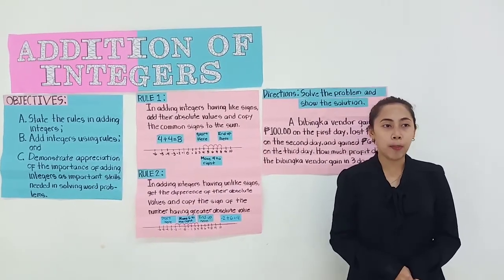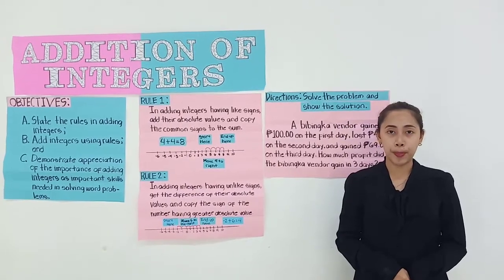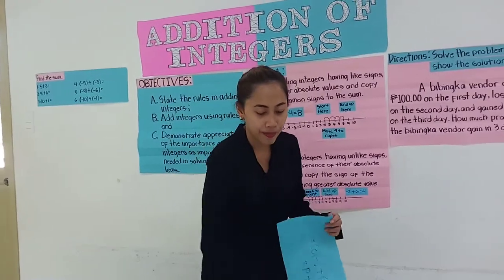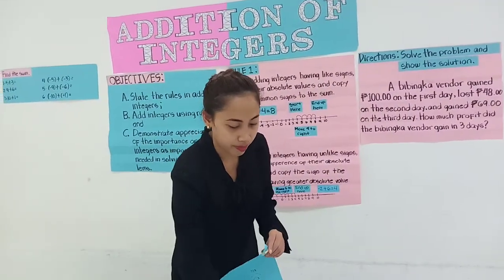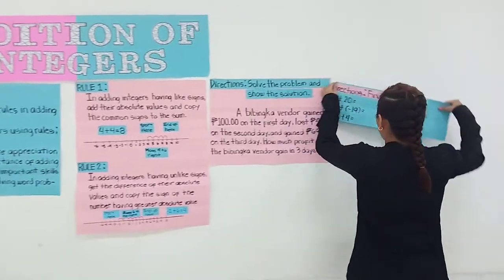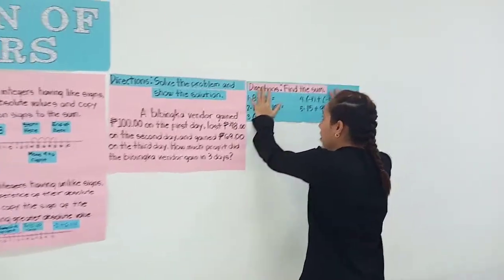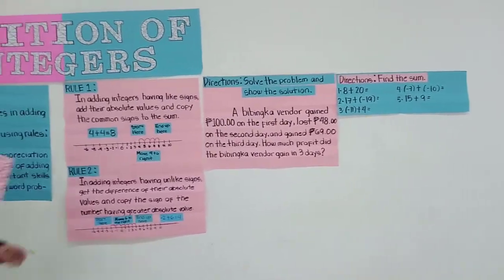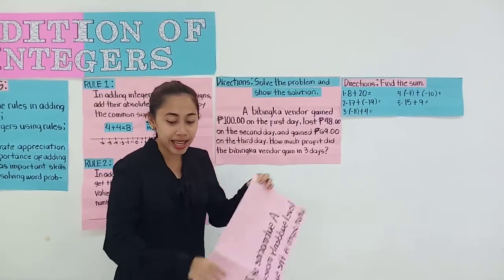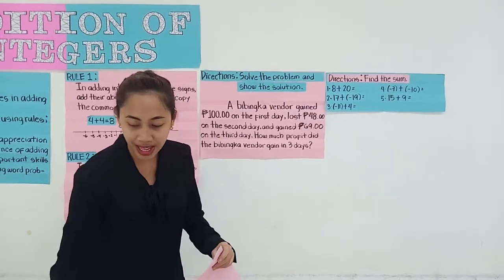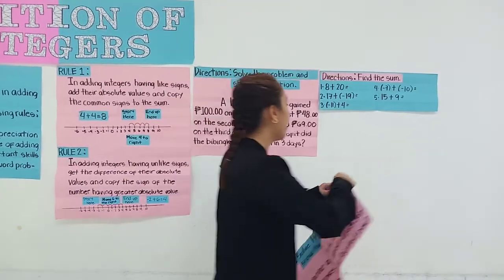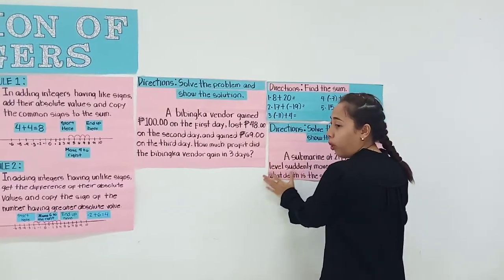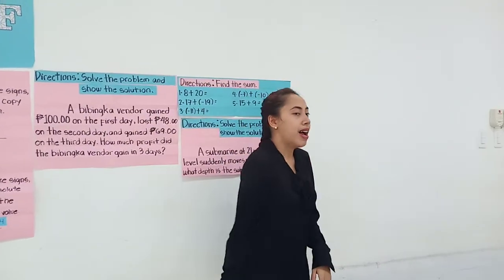Okay, done. So now, please get one half sheet of paper and answer this for 5 minutes. This is the first part. Also answer the second part for 5 minutes, so you have about 10 minutes in total. Please use one whole sheet of paper in answering.